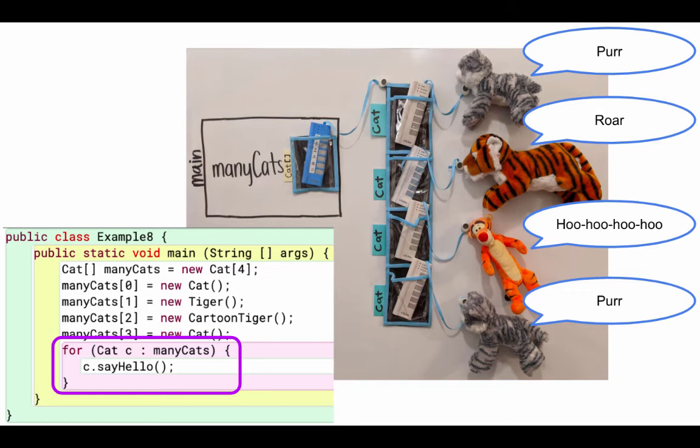And so it provides this opportunity to have a bunch of different types of things all within an array. Before this, we haven't been able to put different types of things in an array, we might have had a string array.